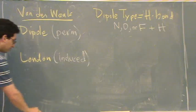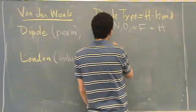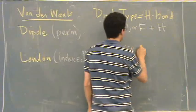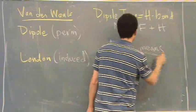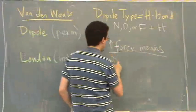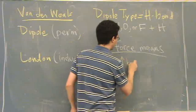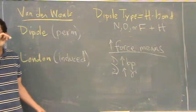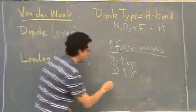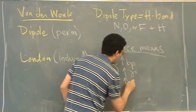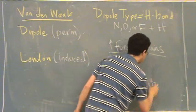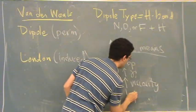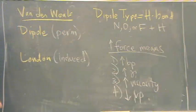So there's those three. One, identify, and two, know the following. Strong force means, so strong or high force means, one, high boiling point. Two, high gamma means what? Surface tension. Surface tension. Three, high viscosity. And four, low vapor pressure.